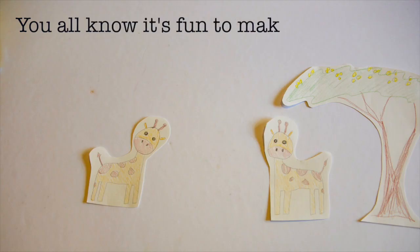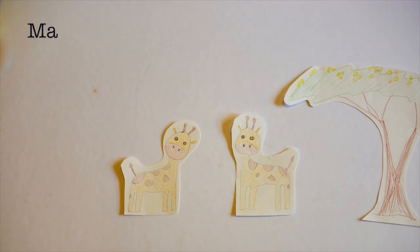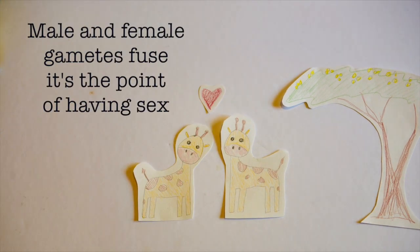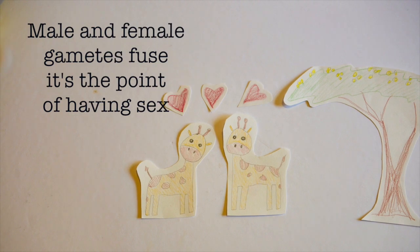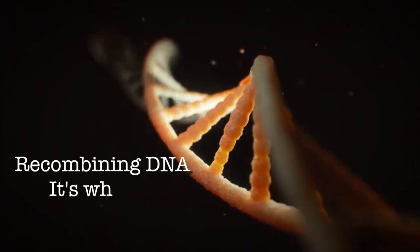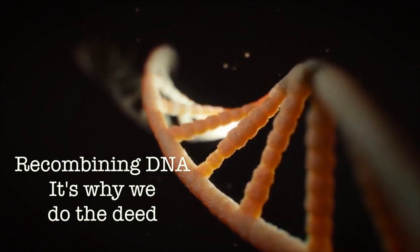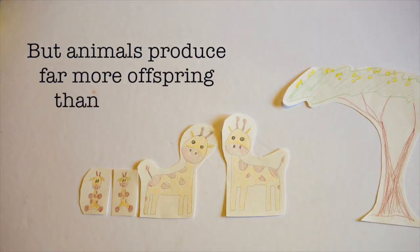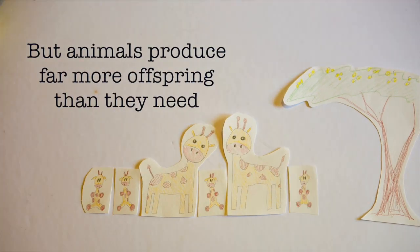You all know it's fun to make the beast that has two backs. Male and female gametes fuse, it's the point of having sex. Recombining DNA, it's why we do the deed. But animals produce far more offspring than they need.